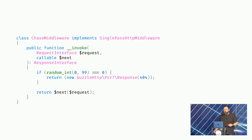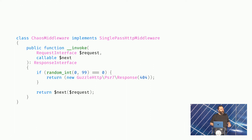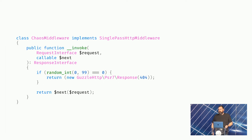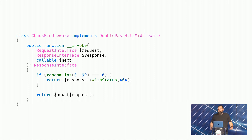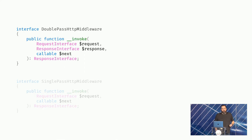One of the biggest sticking points was choosing double-pass over single-pass. To illustrate why double-pass was preferable in some cases: if you wanted to build a chaos middleware — its job being to look at every request that comes in and one out of every hundred requests throw back a 404 — in single-pass you need to return a response object, and here you'd be creating a new Guzzle response, which now ties that specific middleware implementation to Guzzle. If you do double-pass, you can just say 'return the response with a status.' That was why people were focusing on double-pass — it solved the problem of dependencies.